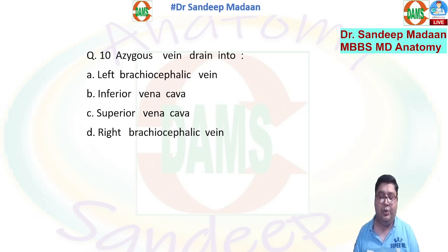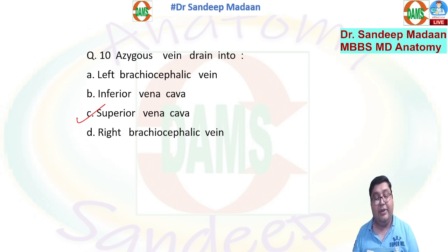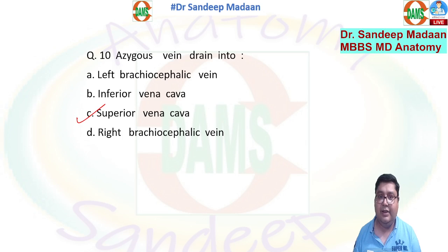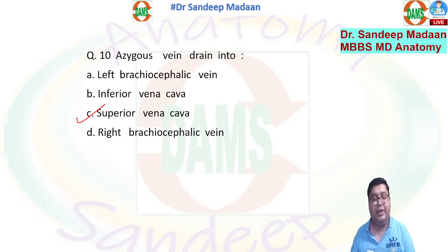The azygos vein drains into the superior vena cava. The azygos vein receives the hemi-azygos vein and the accessory hemi-azygos vein, and after receiving all veins including the posterior intercostal veins, it drains into the superior vena cava.